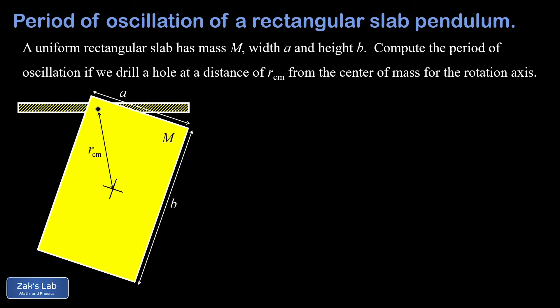In this video we're computing the period of oscillation of a uniform rectangular slab with a mass of m, width of a, and height b, that's drilled near the corner and allowed to oscillate as a physical pendulum. In the diagram I've labeled where the center of mass of this slab is with that little cross, and then up near the corner we've drilled a hole and put a pin through it, allowing this thing to oscillate back and forth through that axis.